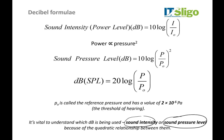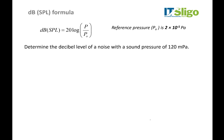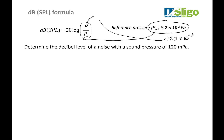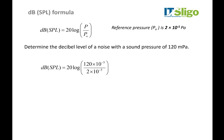Now we'll work through an example using the sound pressure level (SPL) formula. Our reference pressure P0 is 20 micropascals. The question asks us to describe the decibel level of a noise that has a sound pressure of 120 millipascals. We feed 120 millipascals in for P and 20 micropascals in for P0. When you put this into your calculator, you should arrive at an answer of 76 decibels.